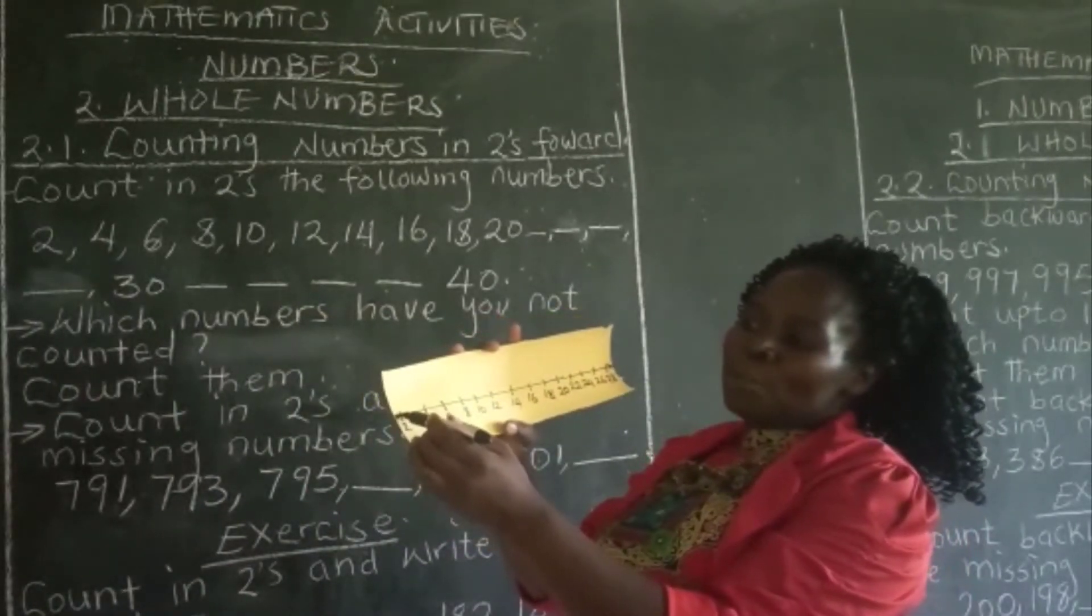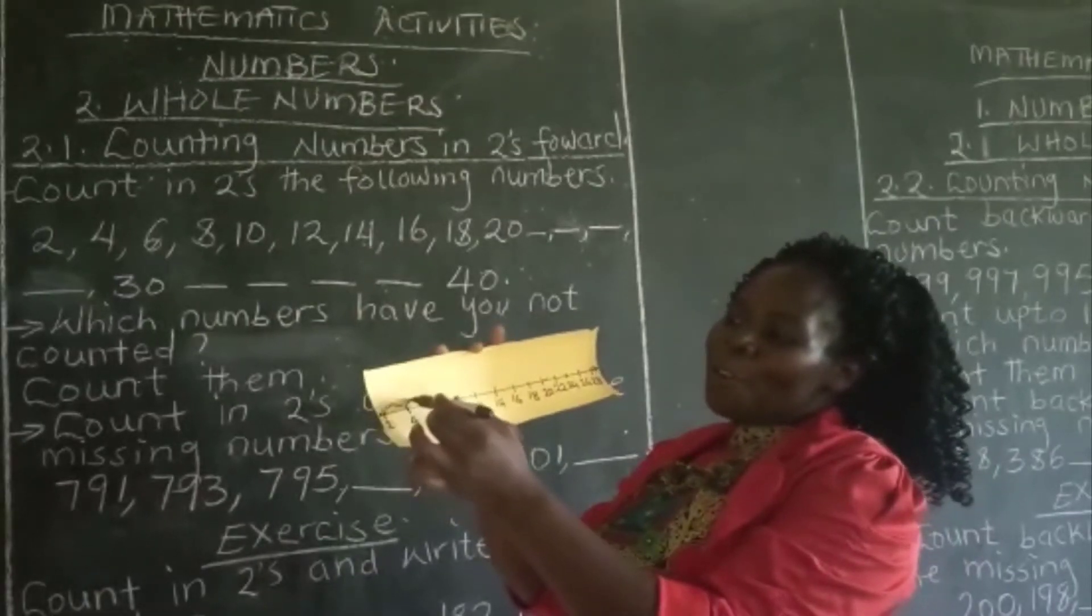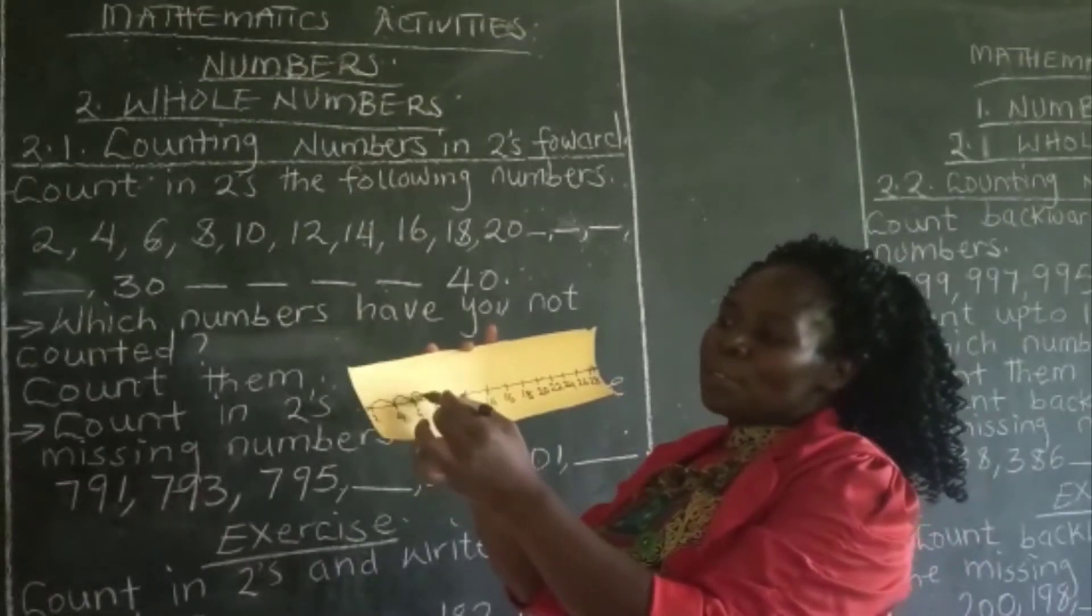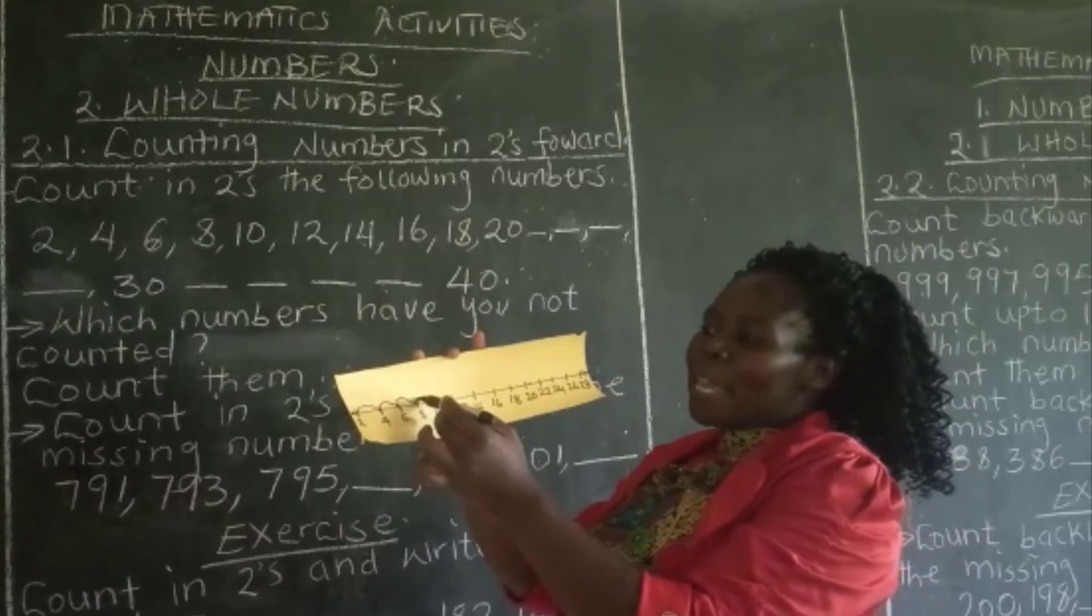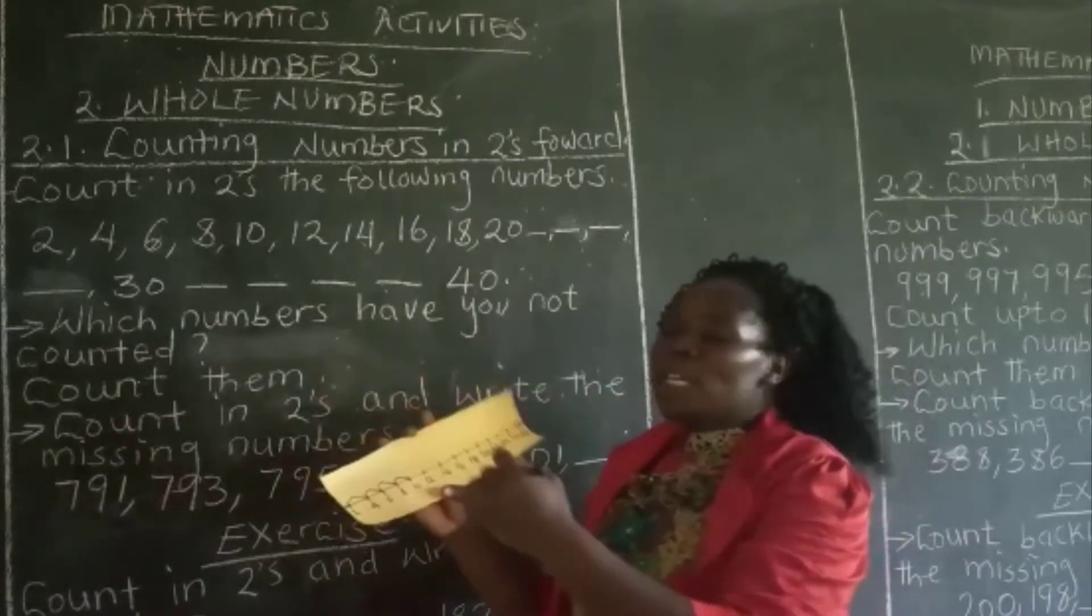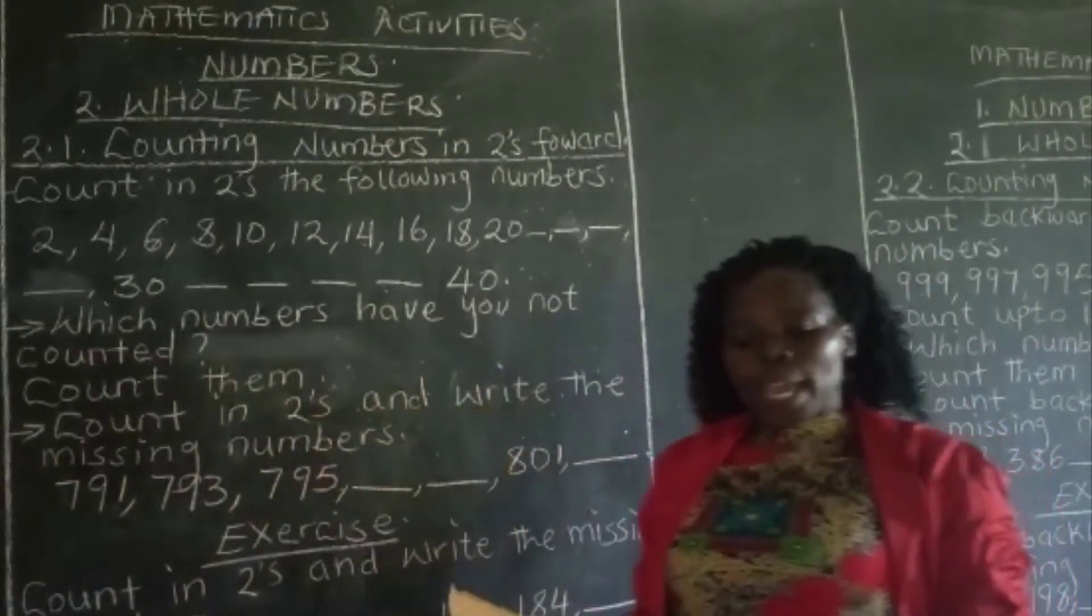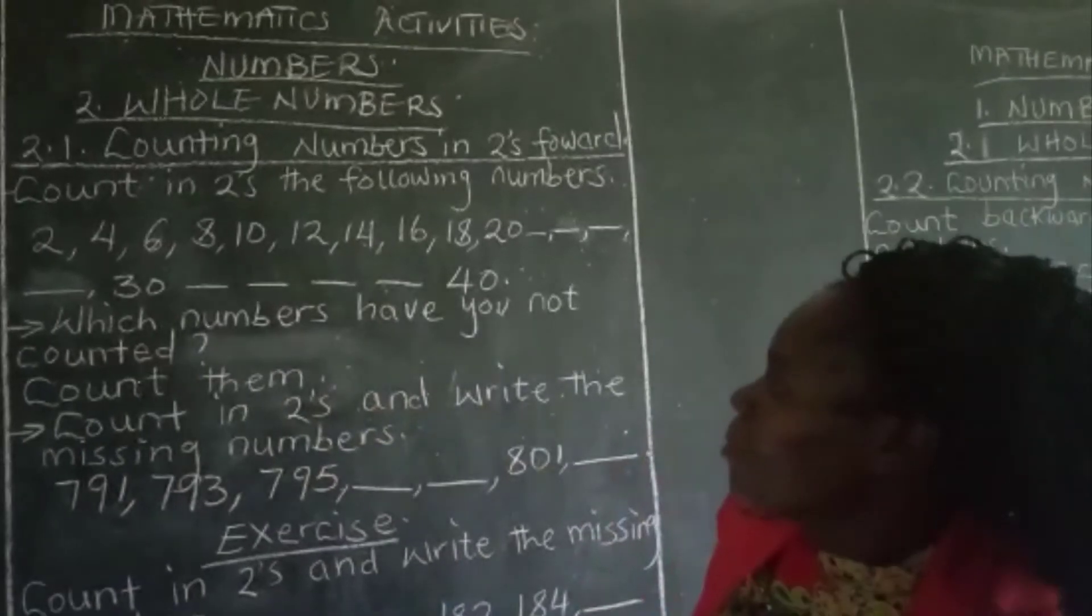You count from 2, you go to 4. From 4, you go to 6. From 6, you go to 8. From 8, you go to 10, that way. And that shows that we are counting the numbers forward.